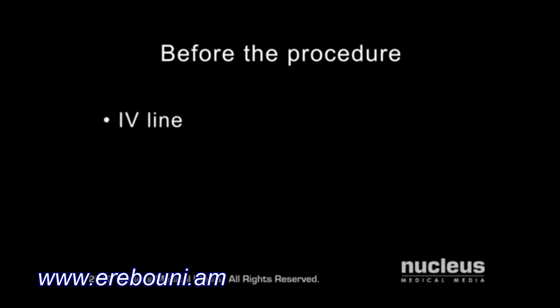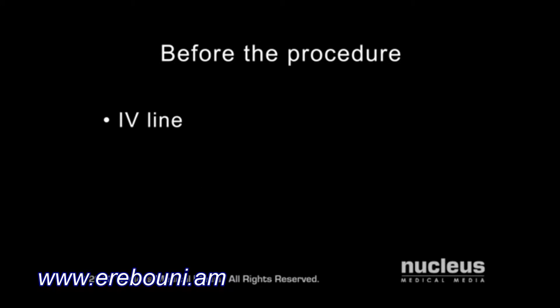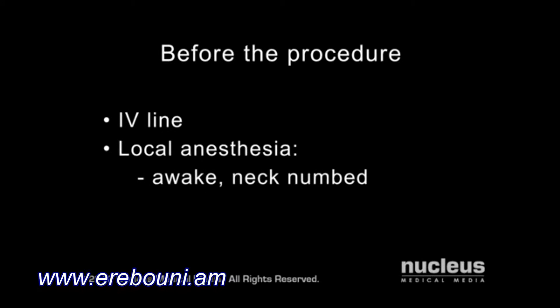Before your procedure, an intravenous line will be started. A carotid endarterectomy is usually done under general anesthesia, which will put you to sleep for the duration of the procedure. In this case, a breathing tube will be inserted through your mouth and into your windpipe to help you breathe during the operation. Sometimes a carotid endarterectomy is done with local anesthesia. If local anesthesia is used, you will remain awake, but your neck will be numbed. You will probably also receive some sedation.